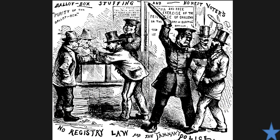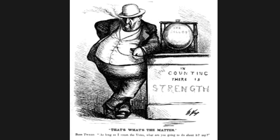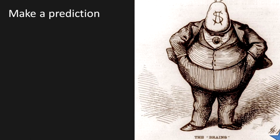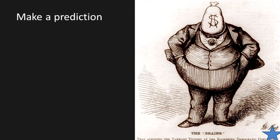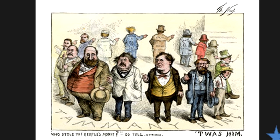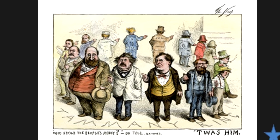Image analysis: what is happening in this drawing? Who is in this drawing and what are they trying to do? Notice what the cop is doing and read what it says on the outside. Next: make a prediction — who do you think this person is, and what is the artist's opinion of this man? Final image analysis: according to this image, why was it so difficult to stop these political bosses from being corrupt? Notice at the bottom it asks who stole the people's money — what are they all doing to each other?